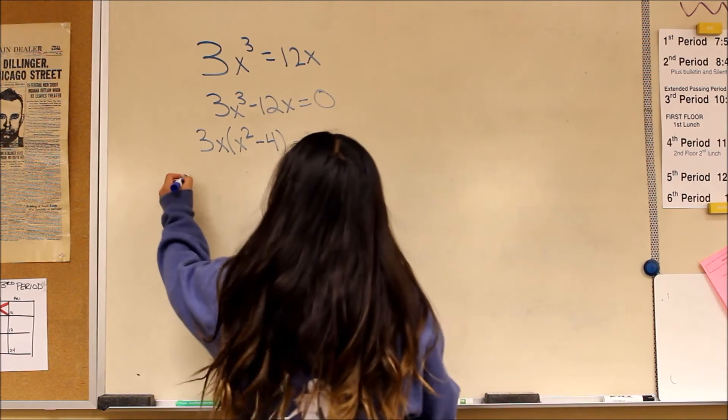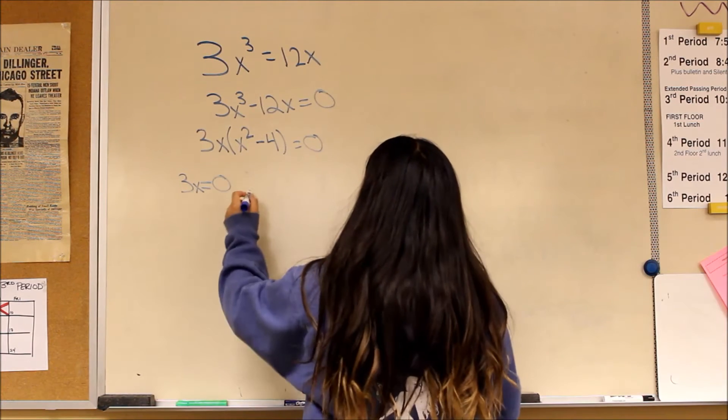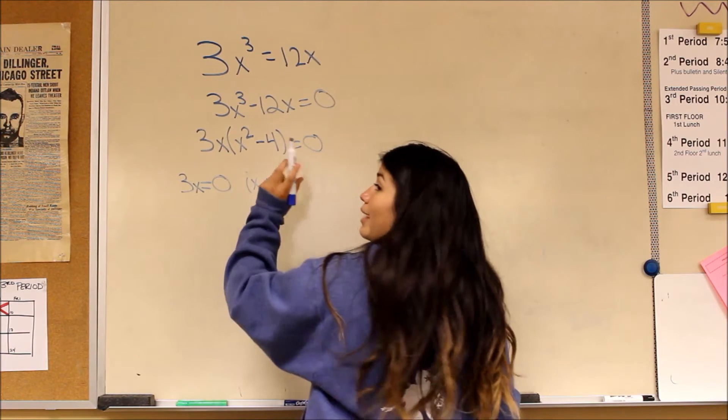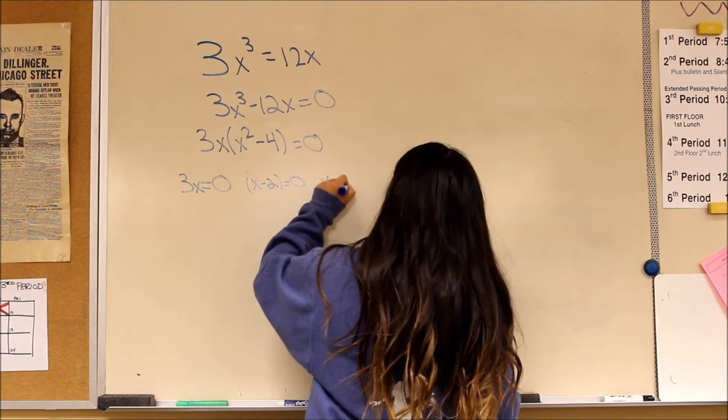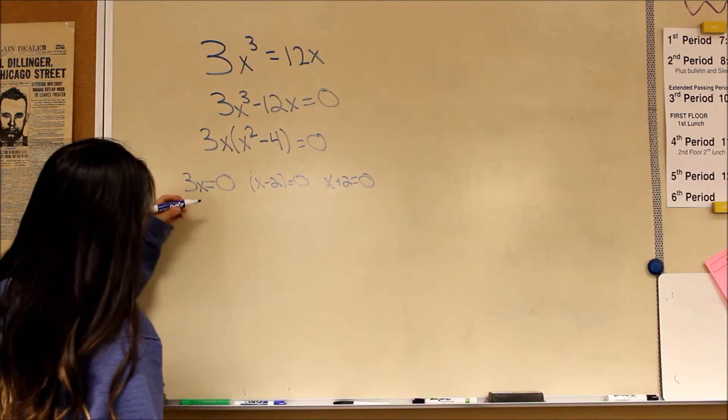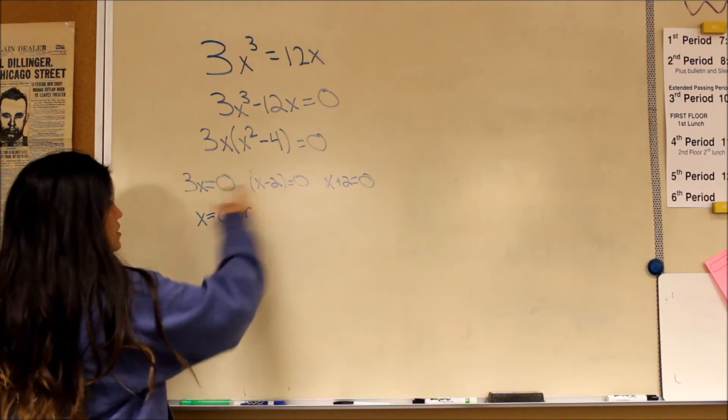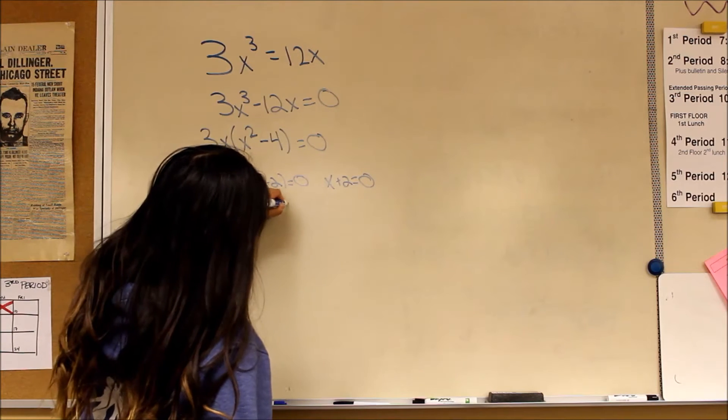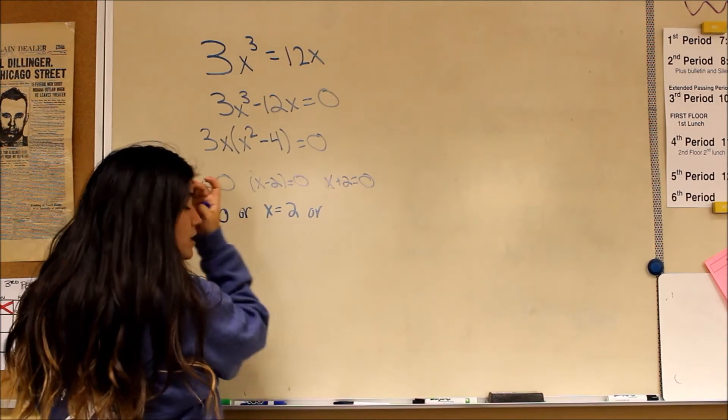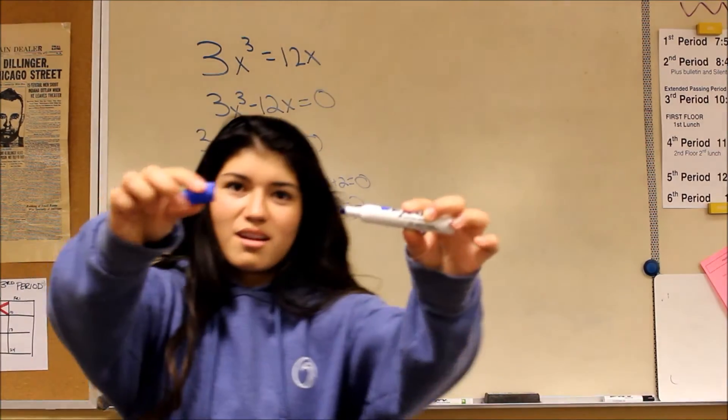So now I set 3x equals to zero. And I'm going to simplify this. So then it's x minus 2 equals to zero. Set that equal to zero. And then x plus 2 also set to zero. And so now you just have to find the value of x. And since you can't divide by zero, x equals zero. Or you have to move the 2 to the other side to get x alone. So x equals 2, positive 2. Or, and then again, move the 2 to the other side to get x by itself. And x equals negative 2. And that is our final product. Put a cap on that.